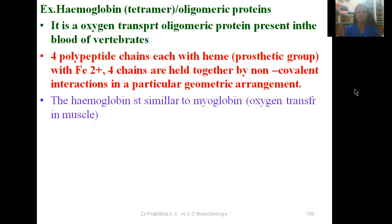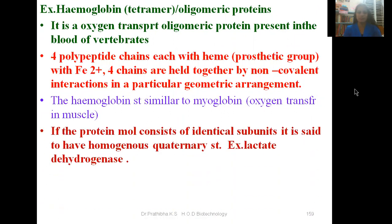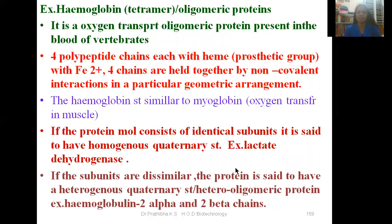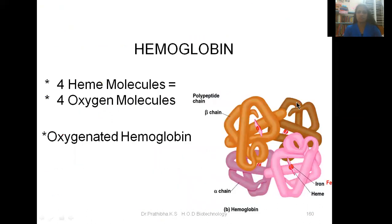The hemoglobin structure is similar to myoglobin, which is an oxygen transfer protein in muscle. If the protein molecule consists of identical subunits, it is said to have a homogeneous quaternary structure — for example, lactate dehydrogenase. If the subunits are dissimilar, the protein is said to have a heterogeneous quaternary structure, or hetero-oligomeric protein — for example, hemoglobin, which contains two alpha chains and two beta chains.